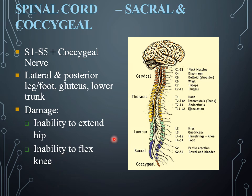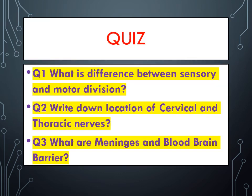That was all about the anatomy of the central nervous system and the peripheral nervous system. Now there is a quiz for your self-assessment — you have to attempt it in the comment section. Question one: what is the difference between the sensory and motor division? Question two: write down the location of the cervical and thoracic nerve. Question three: what are the meninges and the blood-brain barrier?